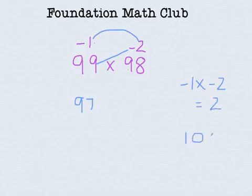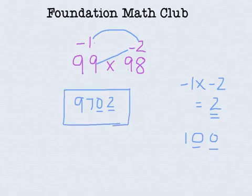Now number of zeros in 100? 2. So the last step should give us 2 digits. But we got only 2. So what do we do? We just write down 2 here. Fill this place up with 0. So our product is 9702.